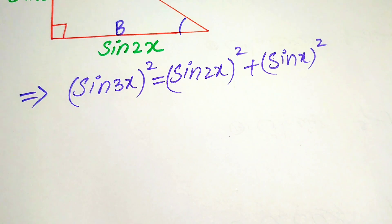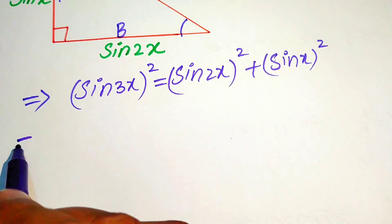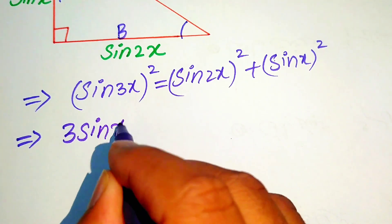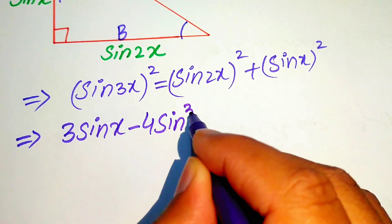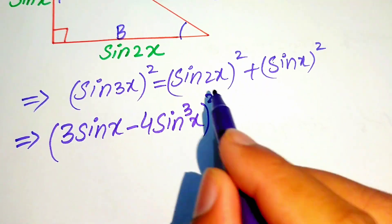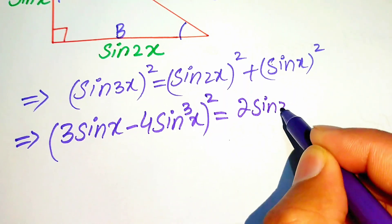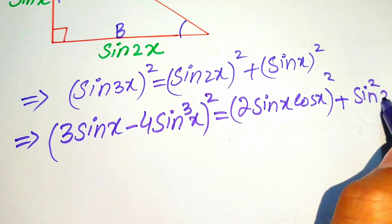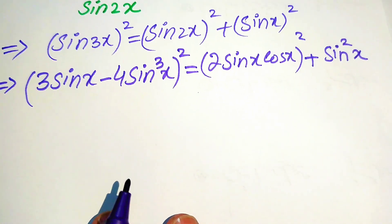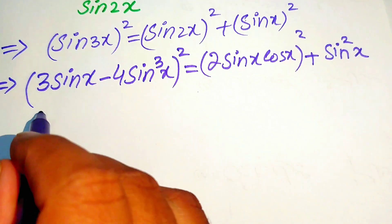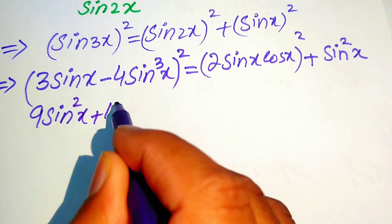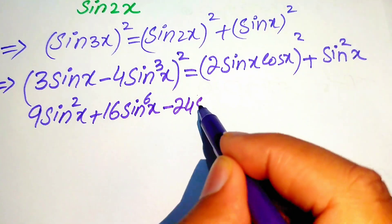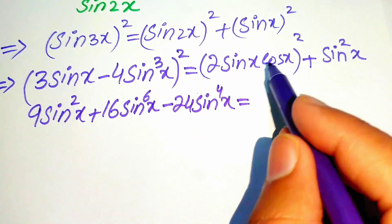Using the triple angle identity, sin 3x = 3 sin x − 4 sin³x, and the double angle identity sin 2x = 2 sin x cos x, we expand both sides. The left side gives: 9 sin²x + 16 sin⁶x − 24 sin⁴x.